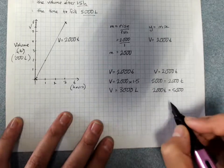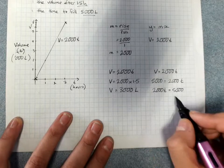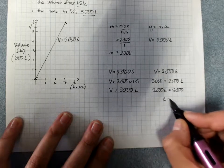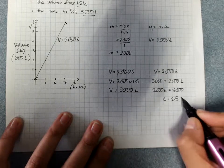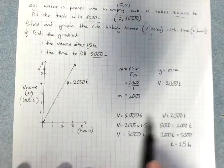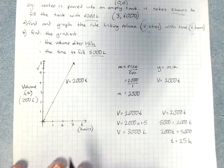To get the T that we want on its own on this side. Divide both sides by 2,000. T equals 2.5 and that's in hours. So it would take 2.5 hours to fill 5,000 liters.